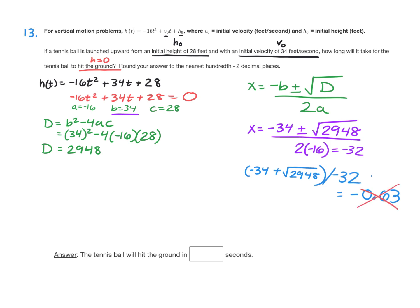Let's try the other case. I just did the plus of the plus or minus. Now we have to do the minus. So negative 34 minus the square root of 2,948. Enclose that in parentheses and then divide by negative 32. And when you type that into the calculator, it ends up being 2.759.